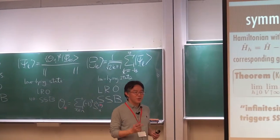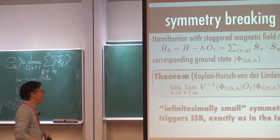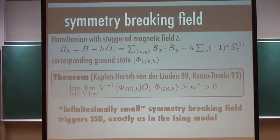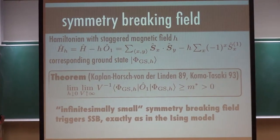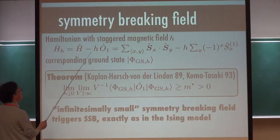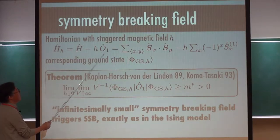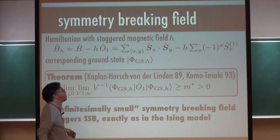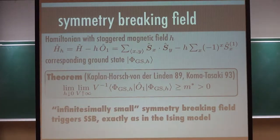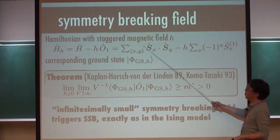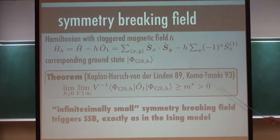Coming back to your question — in order to do this, I have to prepare this. And if I want to proceed like in the Ising model, what we would like to do is consider the Hamiltonian with a staggered magnetic field H and consider this. Of course, this is not very physical; it's not easy to prepare this kind of magnetic field. But theoretically we can do it, and this does not break any fundamental rule of physics. So this is the Heisenberg part, plus the staggered magnetic field term.